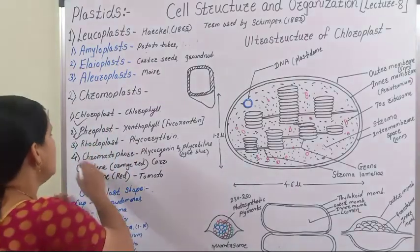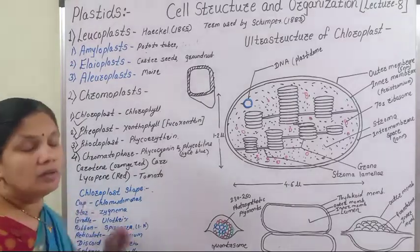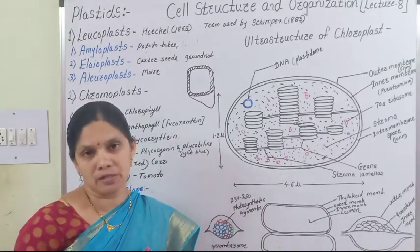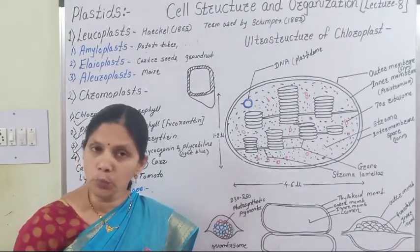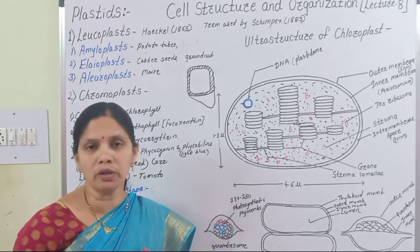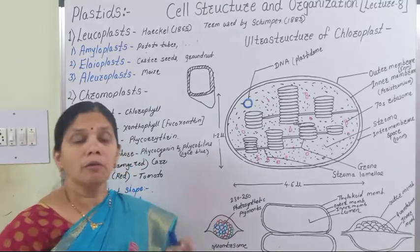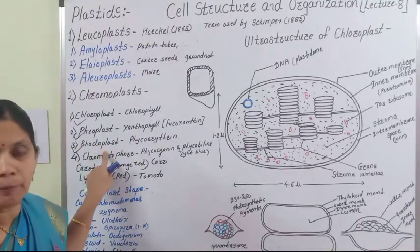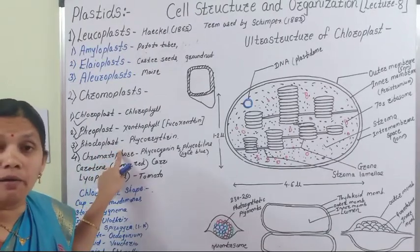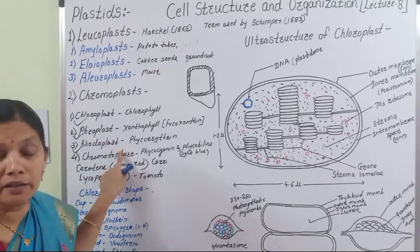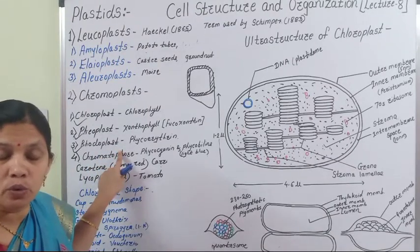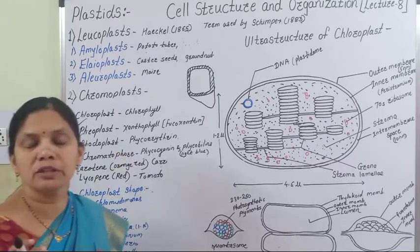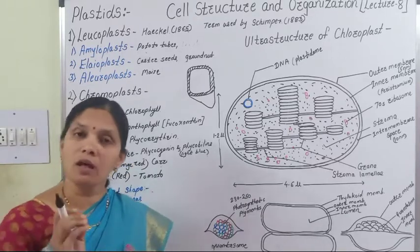Next is the Rhodoplast. In Rhodoplasts, the phycoerythrin pigment is present, and due to the presence of this pigment, these Rhodoplasts are red in color. They give red color to some algae. Rhodoplasts are present in red algae.